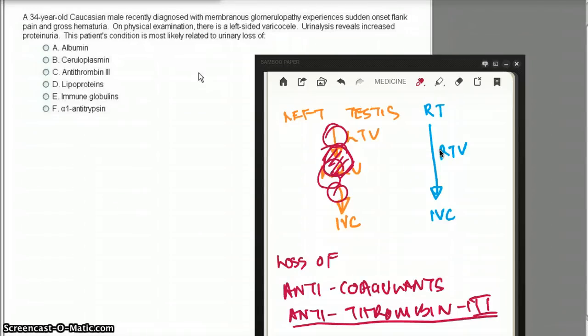What is responsible through the urinary loss that will give us both nephrotic syndrome and hypercoagulable state? That's going to be our antithrombin-3. That's the obvious clue. So C is the correct answer.